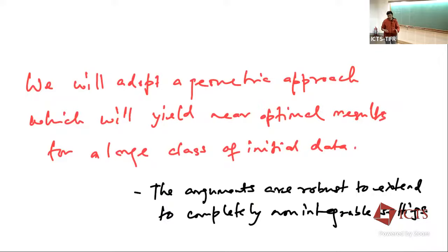What we will do is develop a unified geometric approach which yields optimal results at one go for both positive and zero temperature. Although some of these processes have connections to integrable models like random matrices, the arguments are completely robust and will extend much beyond that setting.